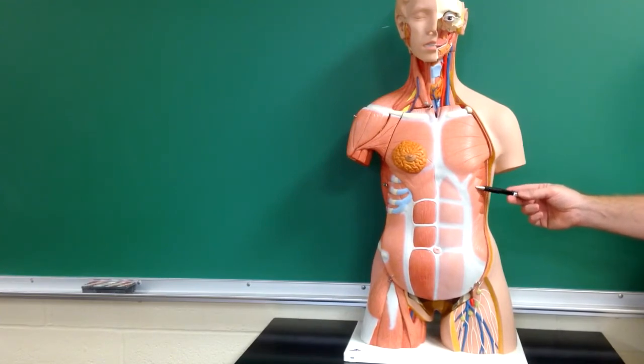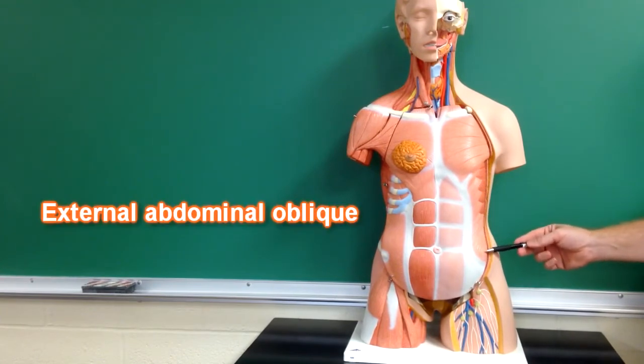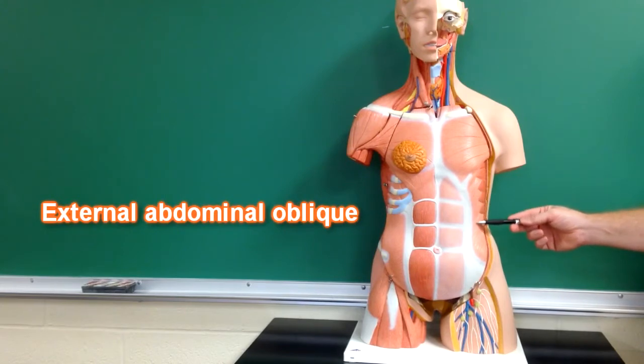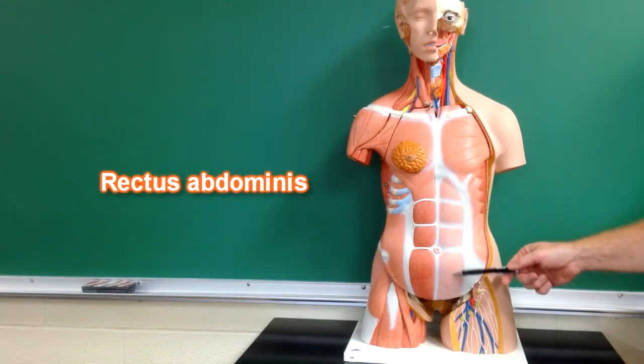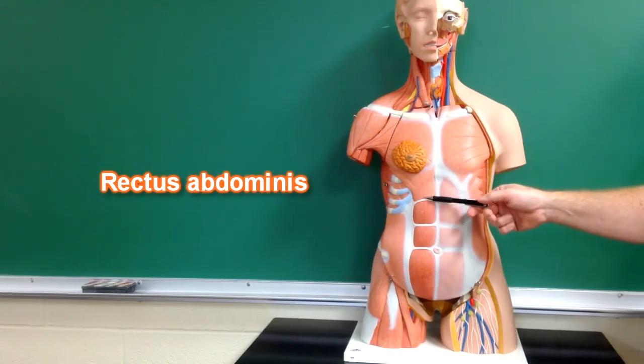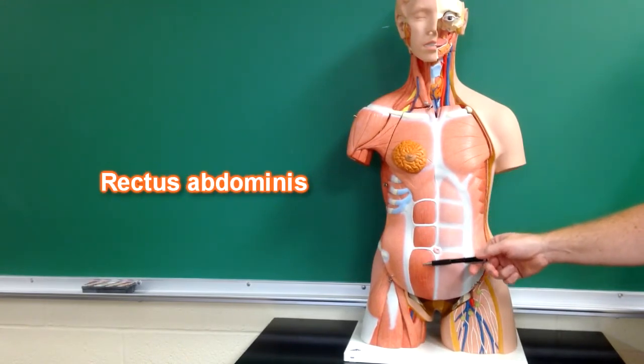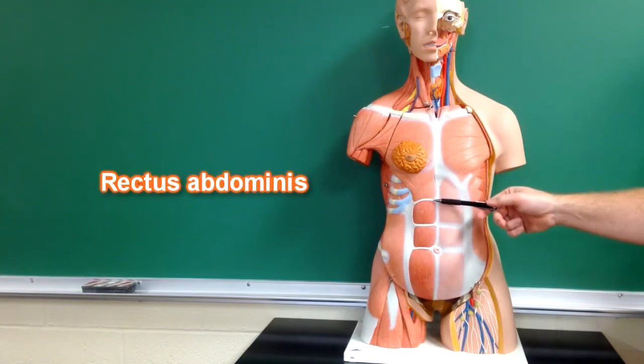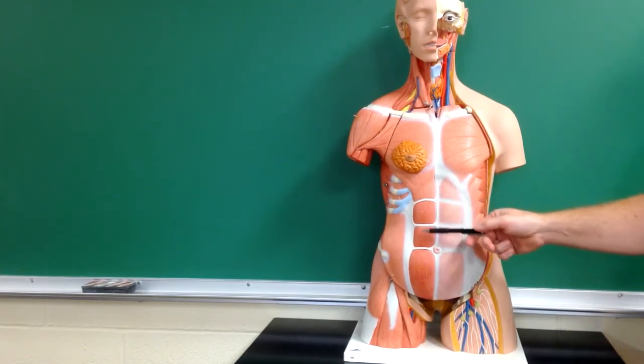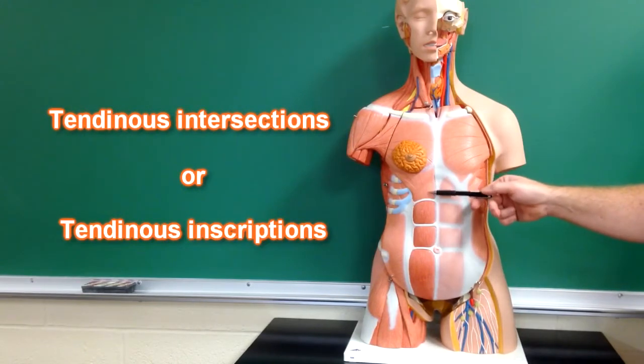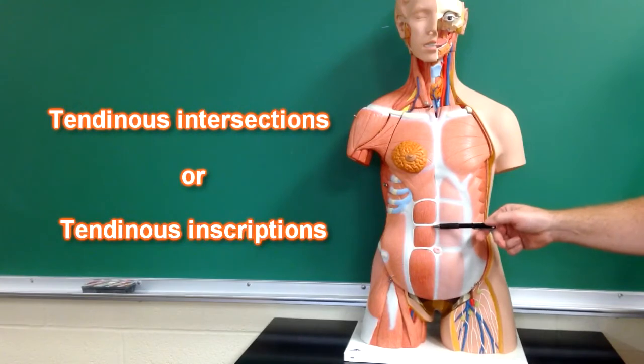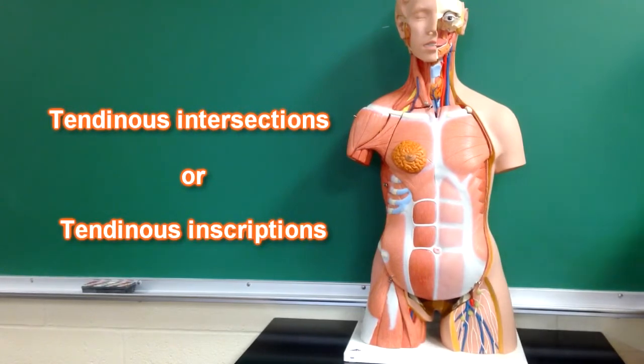Serratus anterior fibers tie in with the external abdominal oblique fibers, which are right here. Here we have rectus abdominis, and what we've done here on this side is remove the rectus sheath so that we can see the muscle fibers. Here we've got white lines in the middle of the rectus abdominis muscle, which separate the fibers to give those fibers extra leverage. These white lines are called tendinous inscriptions or tendinous intersections.